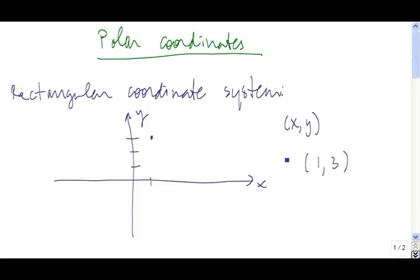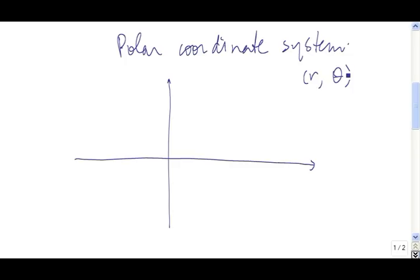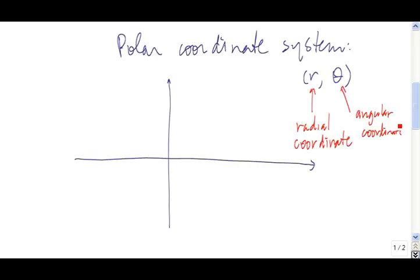The polar coordinate system gives us another way of arriving at points in the plane. In the polar coordinate system, points are labeled as (r, theta). r is called the radial coordinate, and theta is called the angular coordinate. To get to a point in the plane when we're using the polar coordinate system, we start along this polar axis.